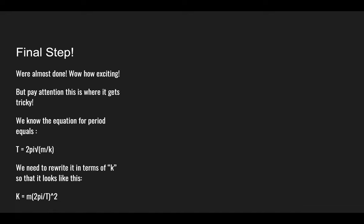So once you get to this point, it gets tricky. We know the equation for a period of anything oscillating is equal to this: period T equals 2π times the square root of the mass divided by the spring constant. So we need to rewrite this in terms of k because we don't know k. Once you rewrite it, it's going to look something like this. I'm not going to go over the algebra because it's going to take too long.